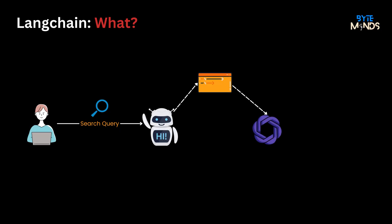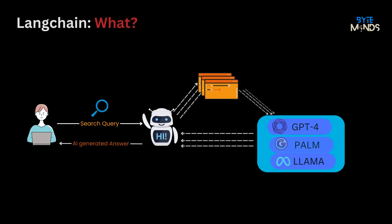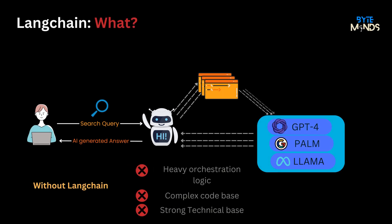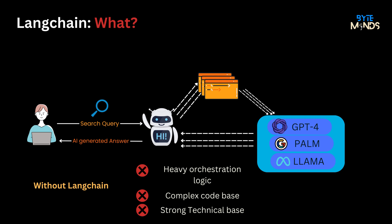Picture this: you're building a clever chatbot app that talks to a smart language model like GPT. Pretty straightforward, right? However, as your application evolves, intricacies emerge. Suddenly, you're linking multiple prompts or creating complex language model chains. Or perhaps you're boldly experimenting, orchestrating a symphony of distinct language models, fine-tuning a loop of refined responses.